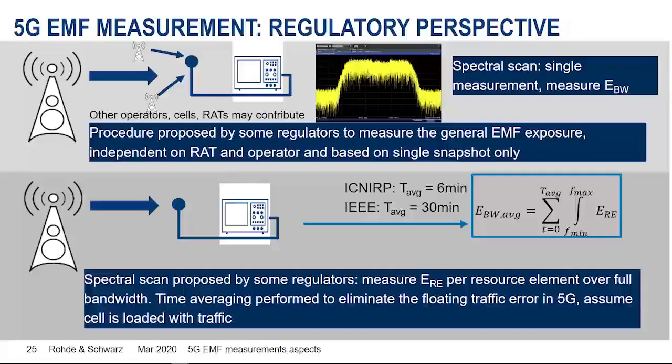Other regulators propose that, because 5G traffic is fluctuating and packet switched, they would like to assume a kind of fully loaded cell. Since we cannot force the base station into a test mode, they propose time averaging — for example, the ICNIRP organization suggests a 6-minute averaging time, while IEEE proposes in some papers an averaging time of 30 minutes.